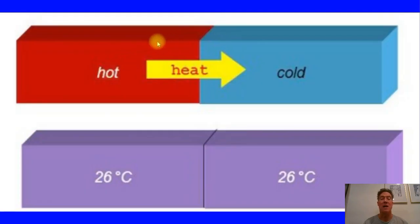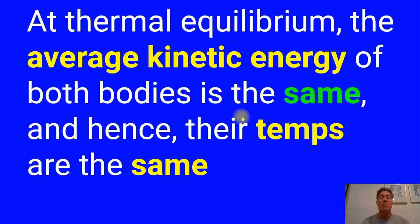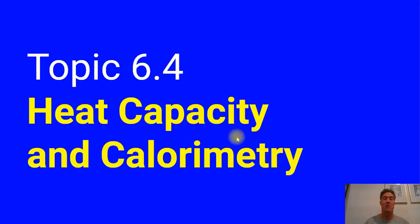Collisions result in a transfer of energy, called heat transfer. Eventually thermal equilibrium is reached as particles continue to collide and reach the same average kinetic energy. If you put a hot metal and a cold metal in contact, heat will spontaneously move from hot to cold. At thermal equilibrium, the average kinetic energy of both bodies is the same, so their temperatures are the same.